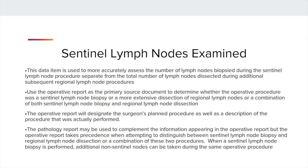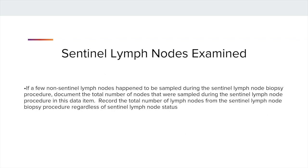Sentinel Lymph Nodes Examined. This data item is used to assess the number of lymph nodes biopsied during a Sentinel Lymph Node procedure, separate from the total number of lymph nodes dissected during the Regional Lymph Node Dissection procedures. Use the operative report as the primary source document to determine if a Sentinel Lymph Node Biopsy, Regional Lymph Node Dissection, or a combination of both were performed. The op report will designate the surgeon's planned procedure as well as provide a description of the actual procedure performed. The path report may be used to complement the information in the op report, but the op note takes precedence.